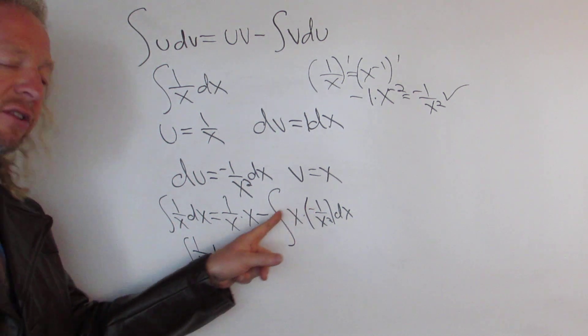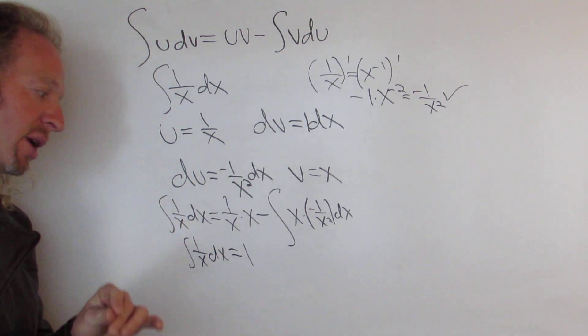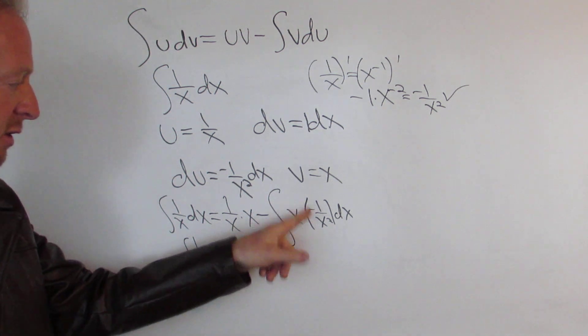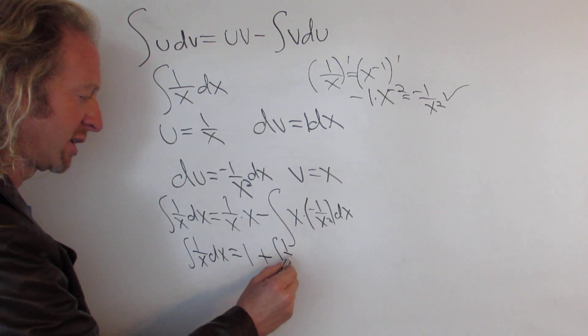Equals 1, the negative and negative give us a positive number right, so this is positive. And then this is just 1 over x, right, because the x's canceled. So we get 1 over x dx.